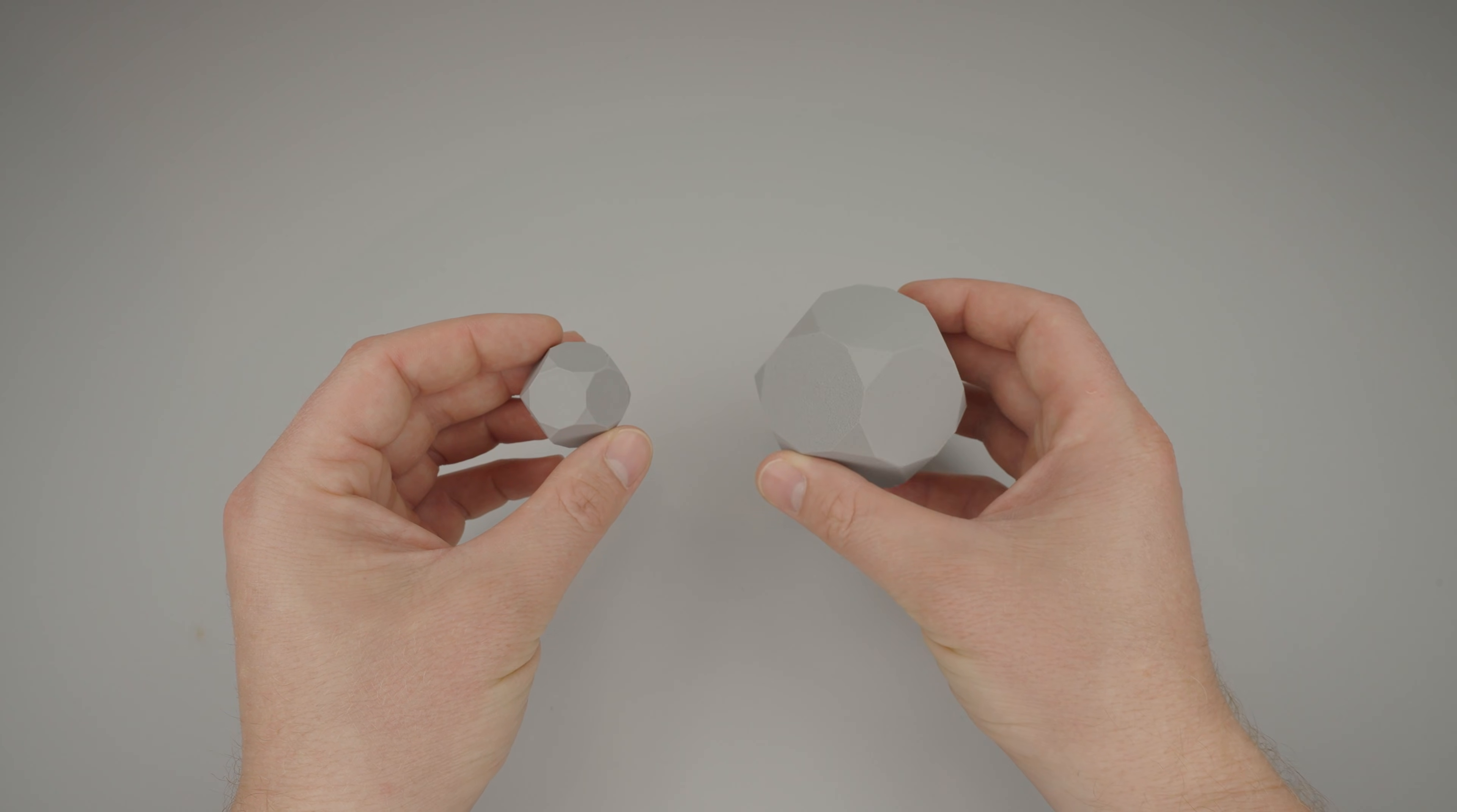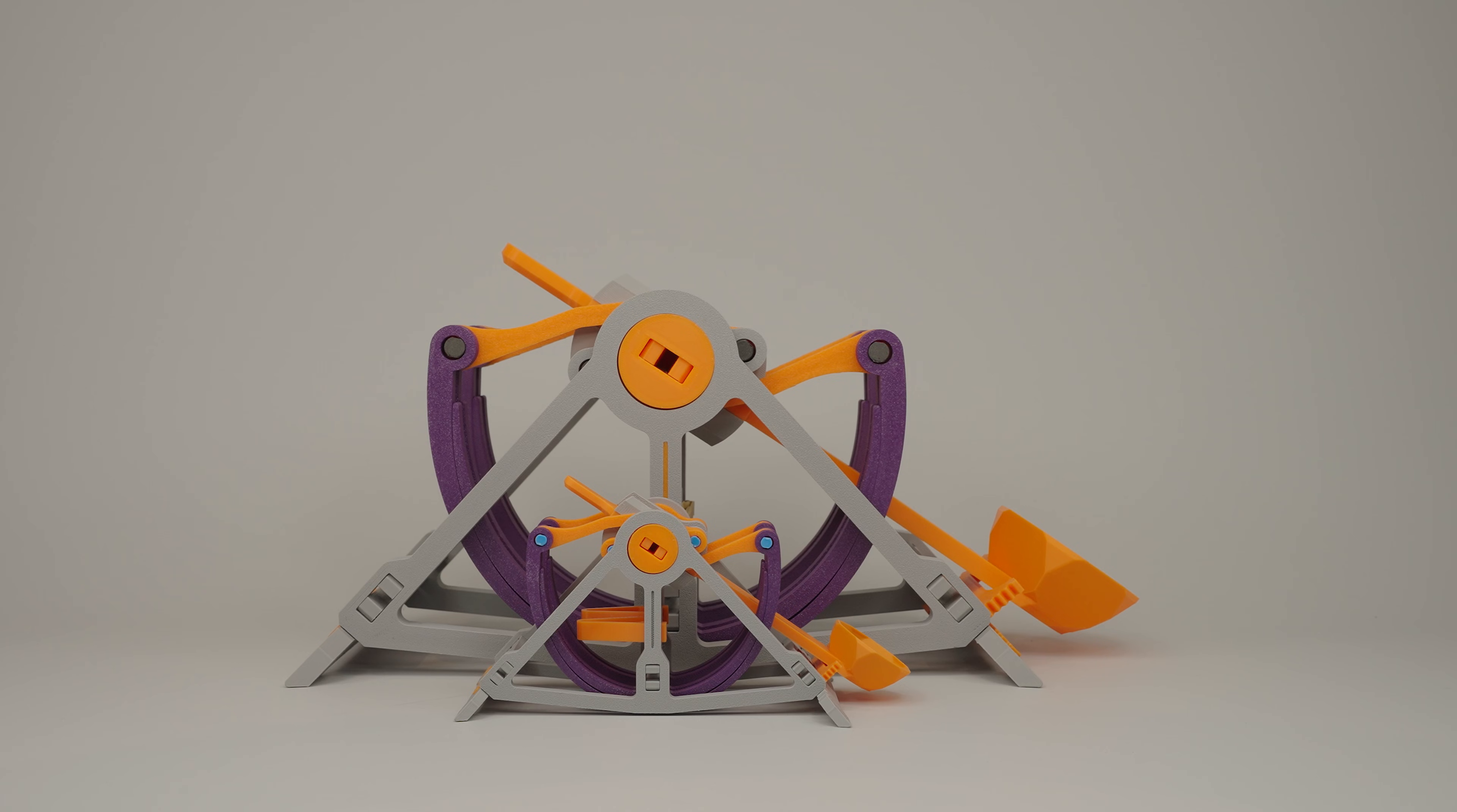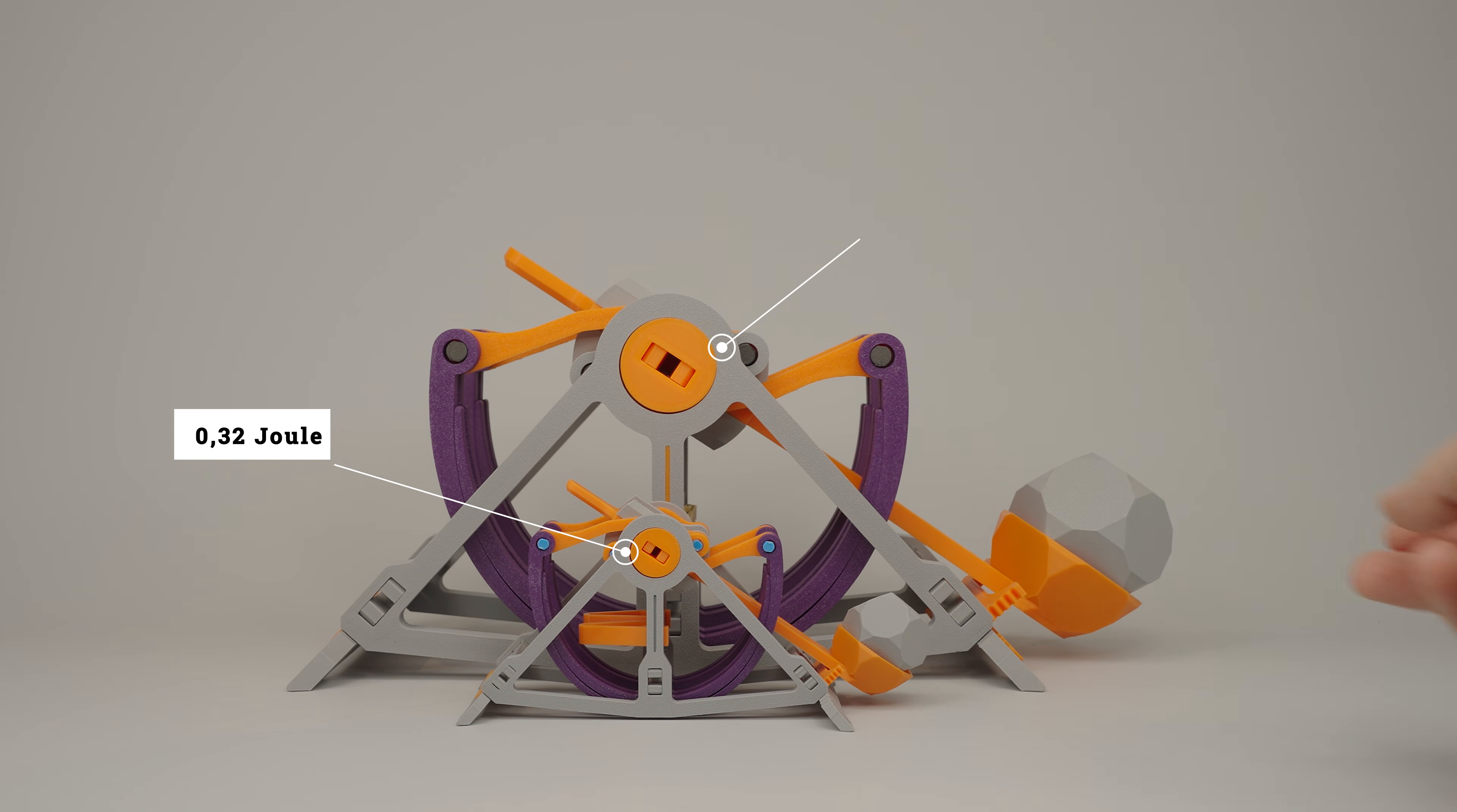With the range and weight of the printed projectiles, we can calculate the energy of the catapults. Assuming perfect conditions, the small catapult achieves an energy of 0.32 joules, while the large catapult reaches an impressive 5.37 joules. So it is almost 17 times stronger.